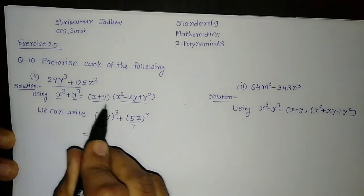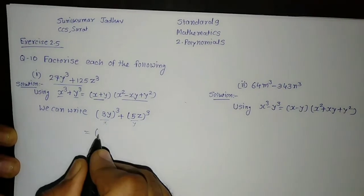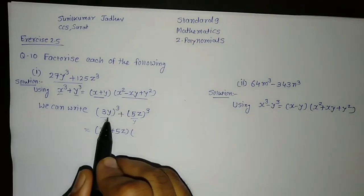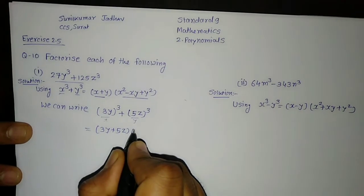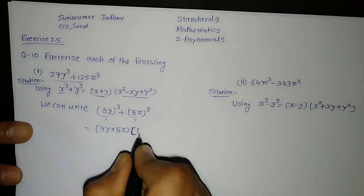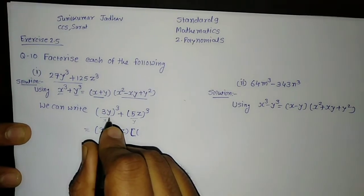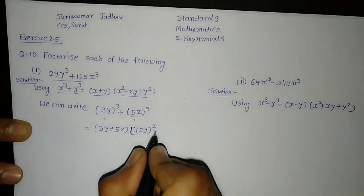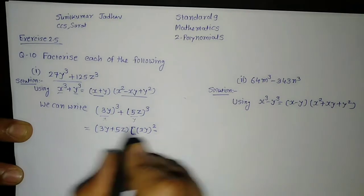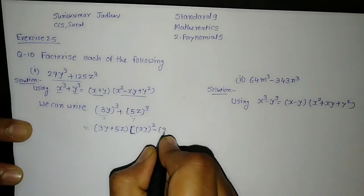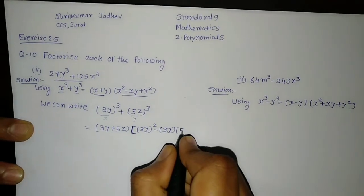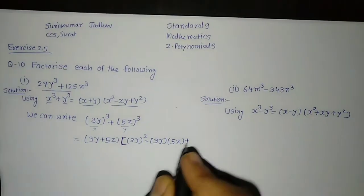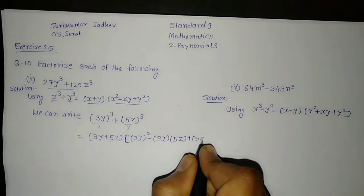Using the formula, x plus y means the sum of both terms, that is 3y plus 5z, into another bracket. x square means the first term squared, so 3y whole square, minus x into y — that is this two terms multiplied — 3y into 5z, plus y square, which is 5z whole square.